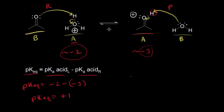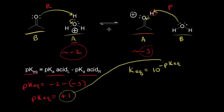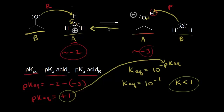We know that Keq equals 10 to the negative pKa. Plugging in our pKeq of 1, the Keq for the forward reaction equals 10 to the negative first. Since K is less than one, that means at equilibrium we have more reactants than products — so the equilibrium lies to the left.